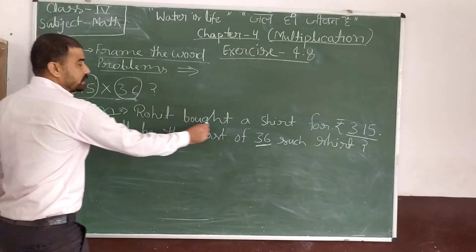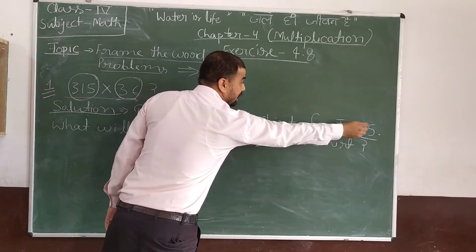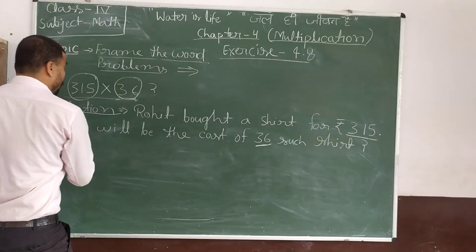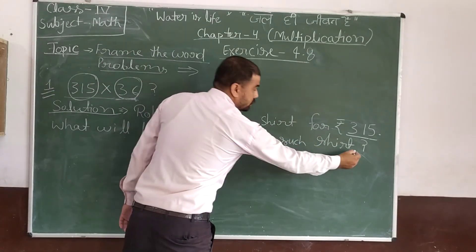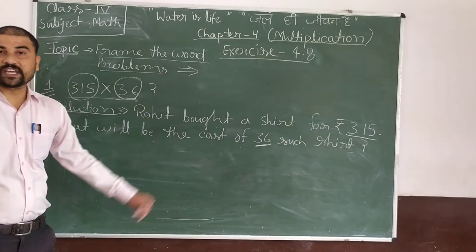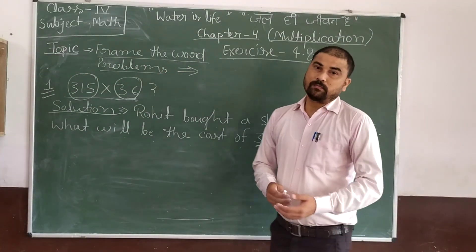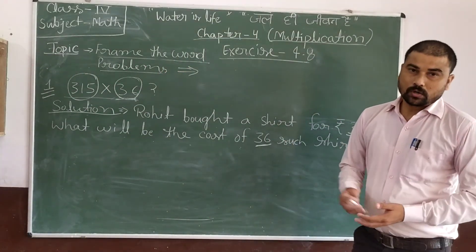So the word problem is Rohit bought a shirt for rupees 315. What will be the cost of 36 shirts? So it is very easy. You can make other word problems by the given numbers.